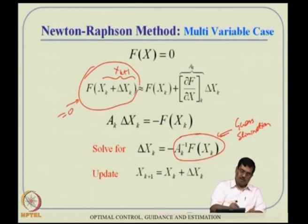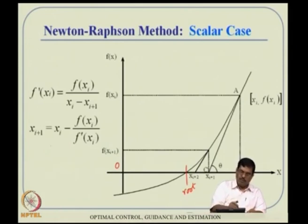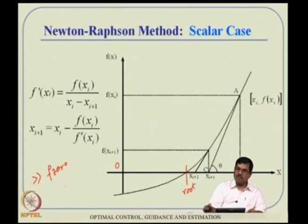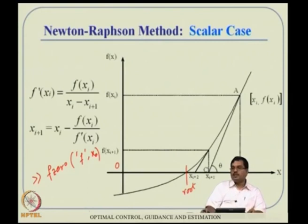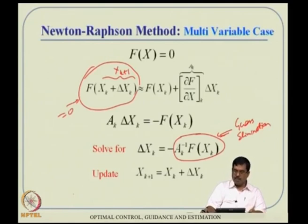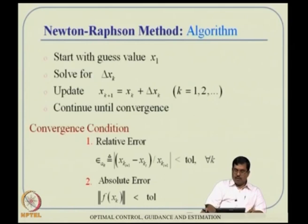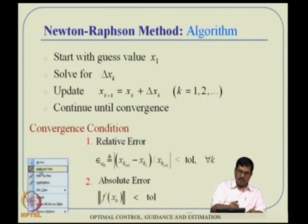The algorithm: start with a guess value x_1, solve for Δx_k, and update x_{k+1} = x_k + Δx_k. Continue until convergence. In MATLAB, for scalar problems, there is a built-in function fzero — provide the function and an initial guess value, and it finds the root. For multidimensional root finding, you may need to use the optimization toolbox or write your own function.